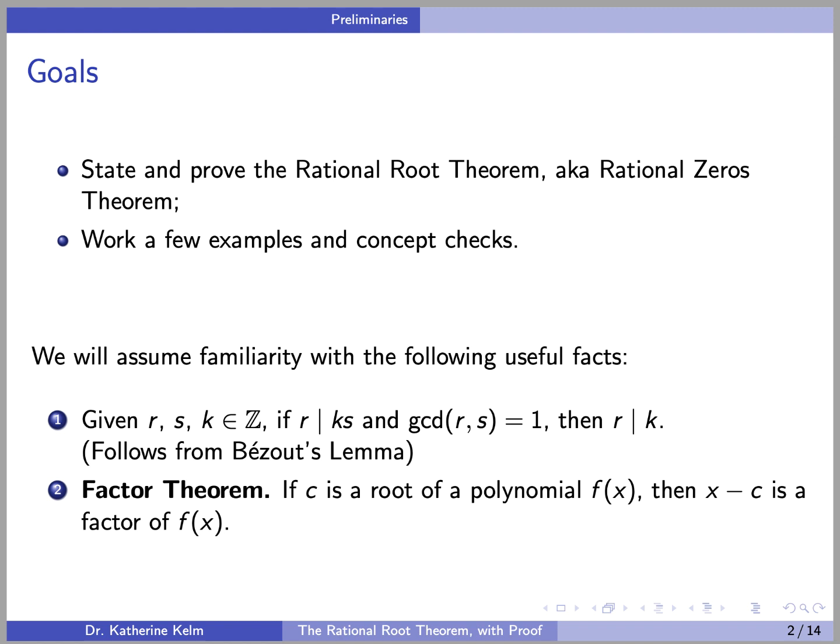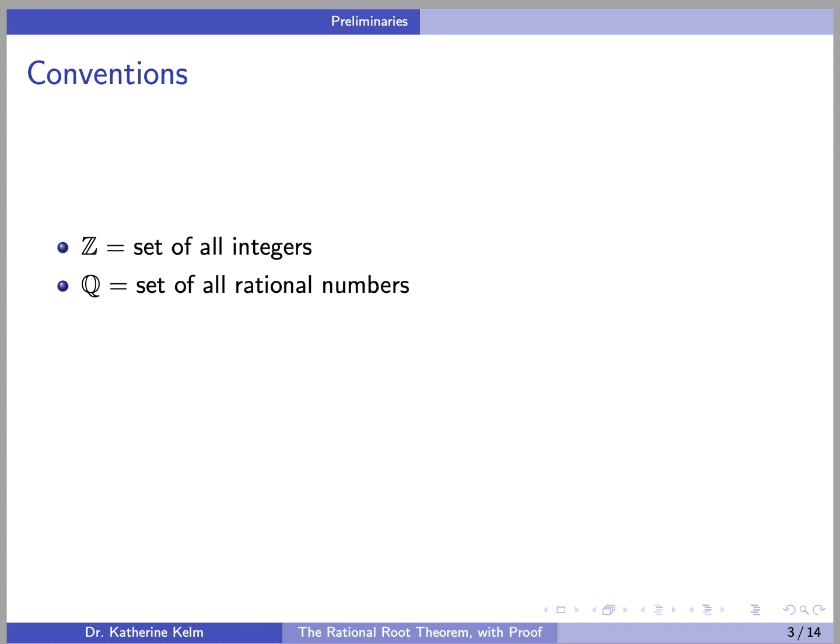Second, what's usually known as the Factor Theorem, which we will use in our examples: if C is a root of a polynomial f, then x minus C is a factor of f. In this video, we will use Z to denote the set of all integers, and Q to denote the set of all rational numbers.